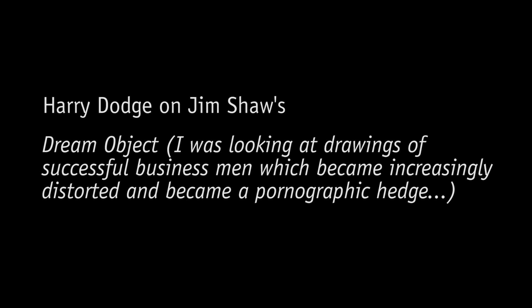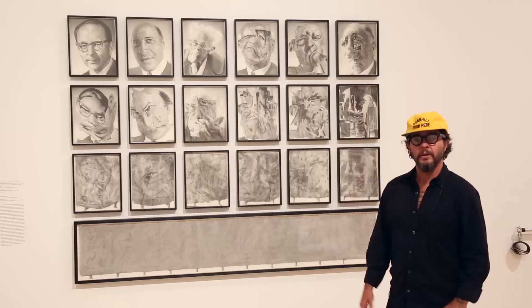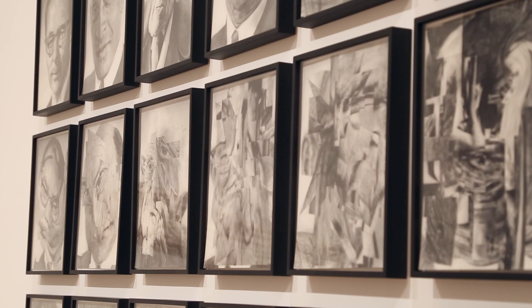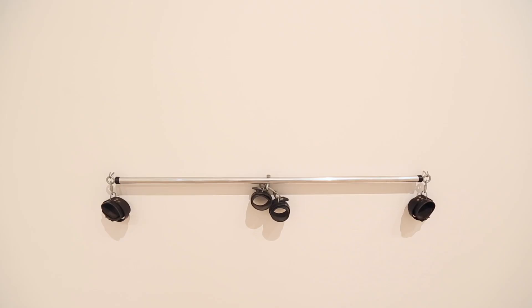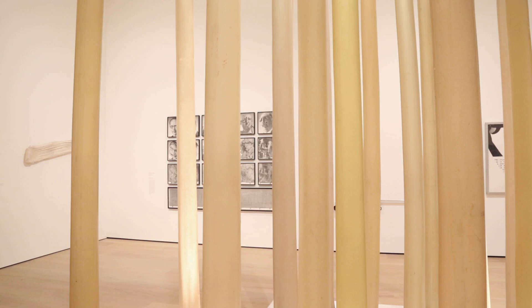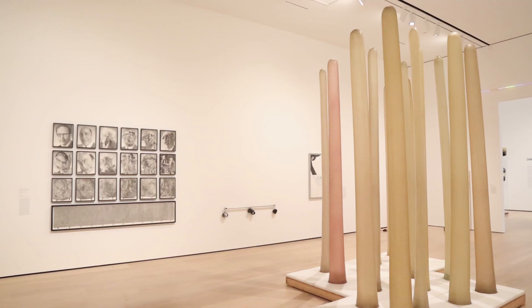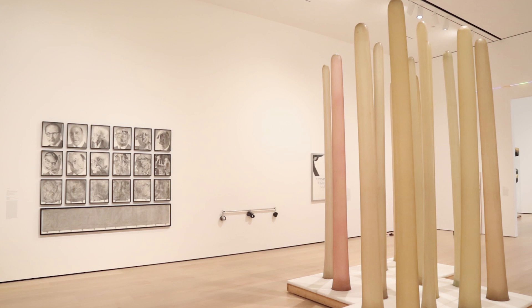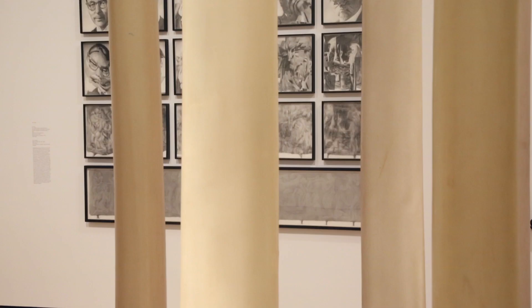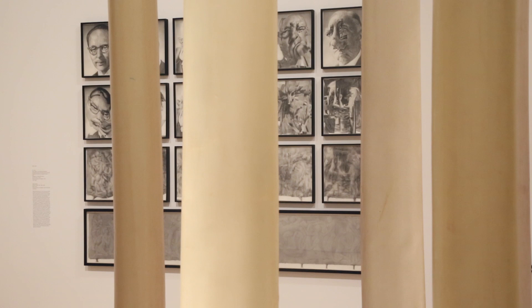I was looking at drawings of successful businessmen which became increasingly distorted and became a pornographic hedge. This is a big multi-part graphite drawing by Jim Shaw, and in the show it's sandwiched between Nalan Blake's erotic restraints piece and Barbara Smith's field piece. I just love looking at the Shaw next to these other pieces. These other works pressure the Shaw and to me provide a hilarious, wizened challenge to the meaning-making machine in the big drawing.